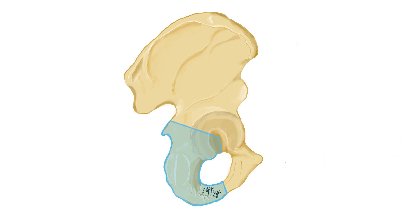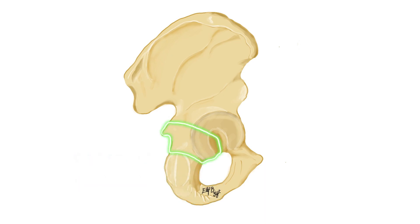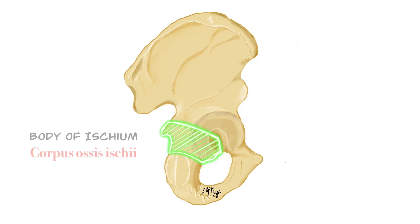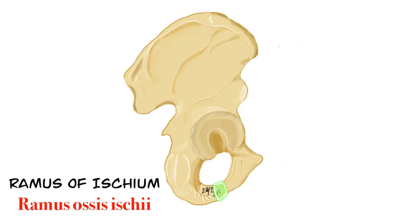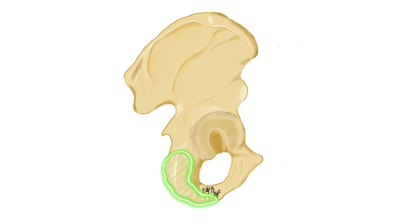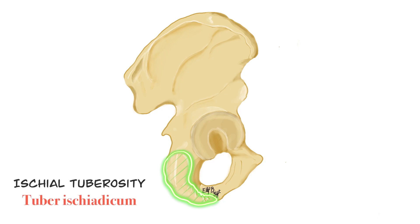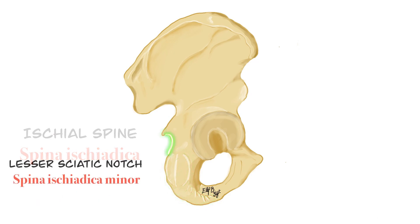Now let's focus on the structural anatomy of the os ischii. The body of the os ischii makes up two-fifths of the acetabulum, also known as corpus osis ischii in Latin. There is a thin flattened part called the ramus of the ischium, or ramus osis ischii in Latin. Inferior to the lesser sciatic notch, the body of the ischium extends into the ischial tuberosity, or tuber ischiaticum in Latin. The spina ischiadica and incisura ischiadica minor belong to the ischium bone.